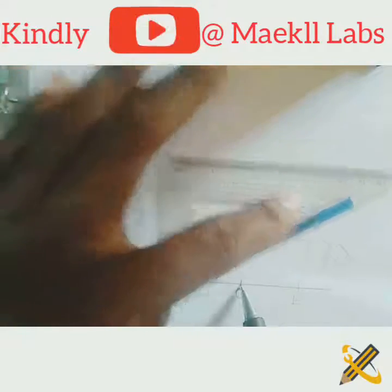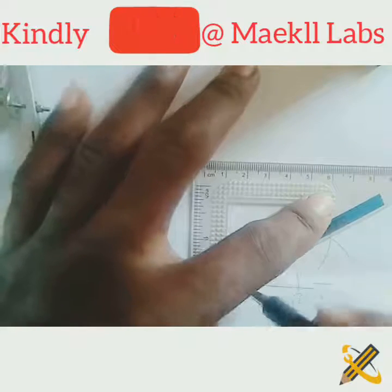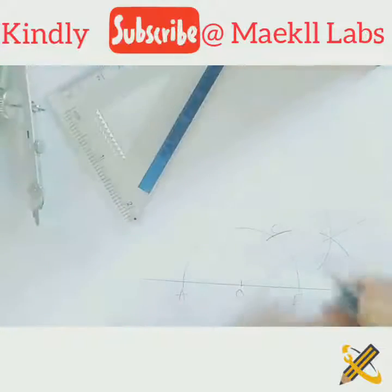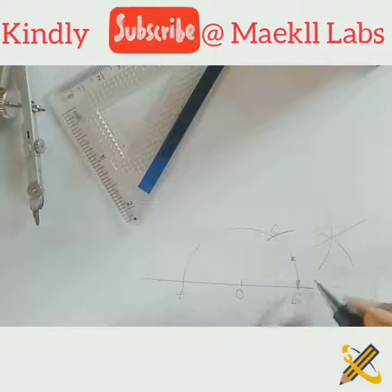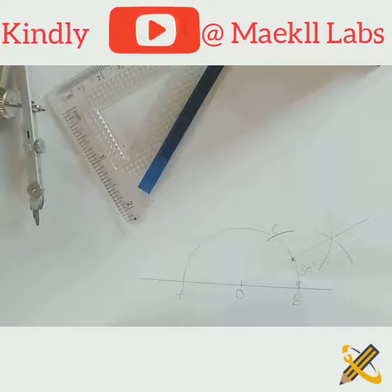Then draw from point O to the intersection on CB. The angle from here to here is 30 degrees. Thank you.